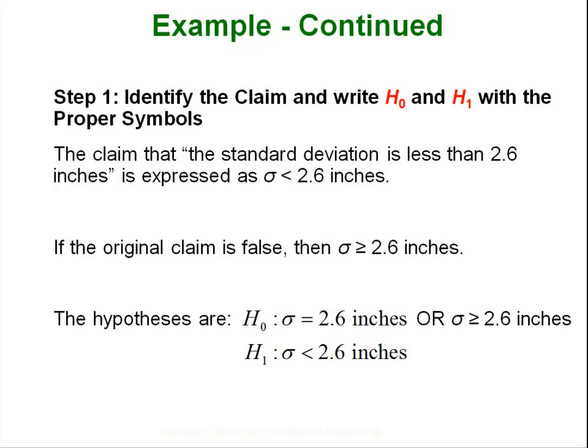So on to our hypothesis testing. Step 1: identify our claim and write our hypotheses with the proper symbols. Our claim is that the standard deviation is less than 2.6 inches which we would express as σ < 2.6 inches. If that's not true then the other side of the argument is that it's greater than or equal to. The traditionalists will then make your null hypothesis strictly equal to, but having it greater than or equal to is actually becoming more accepted. And then the alternative is always just going to be less than. And in this case the alternative is our claim. It's always good to identify which of our two hypotheses is our claim.